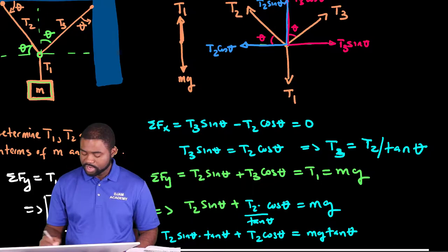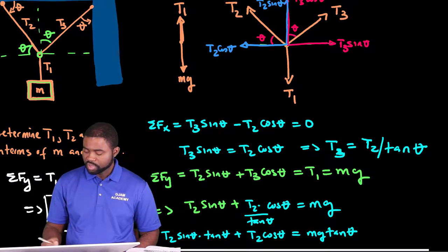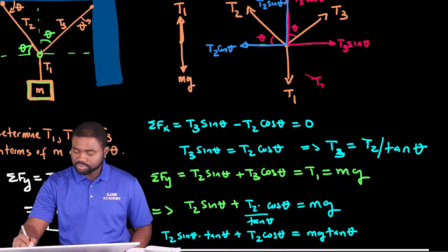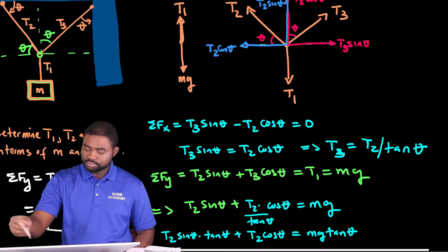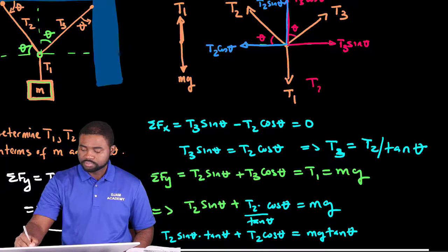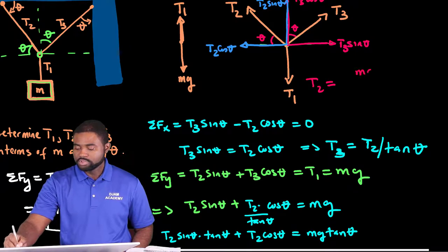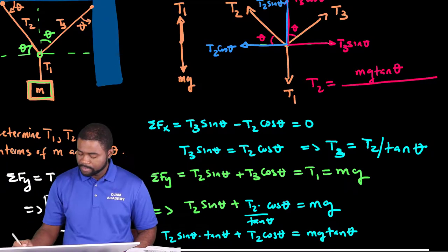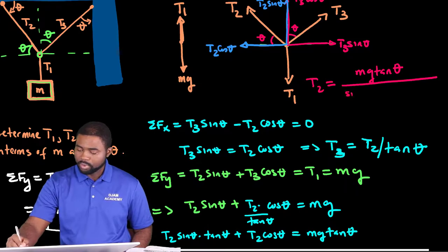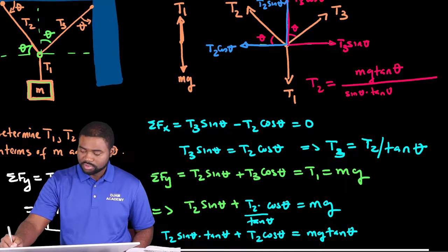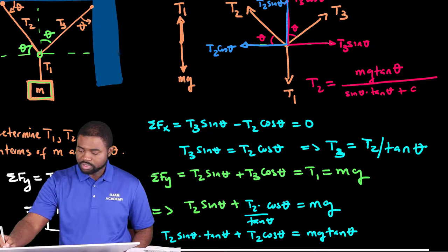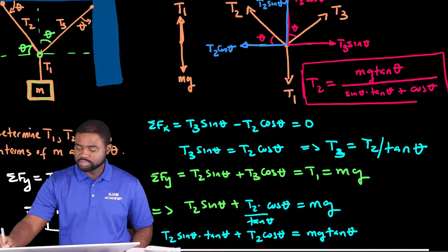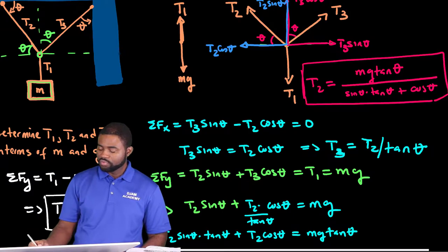So, we can factor in terms of T2. If we factor in terms of T2, we will see that T2 is equal to mg tan theta divided by sin theta tan theta plus cosine theta. So, this gives us the expression for T2.